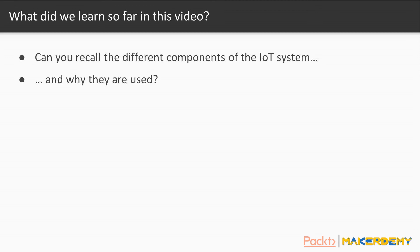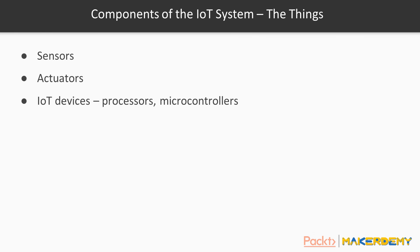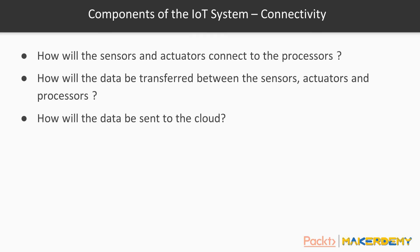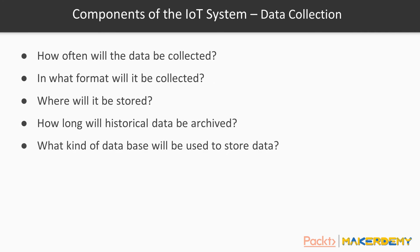Let us quickly look at the components of the IoT system of this case study. Firstly, we have the things — the sensors, the actuators, and the computing units. Next, we have the connectivity, which addresses how the sensors will connect and transfer the data to the processors and how the processors will move the data to the cloud. Next comes the data collection part of the system.